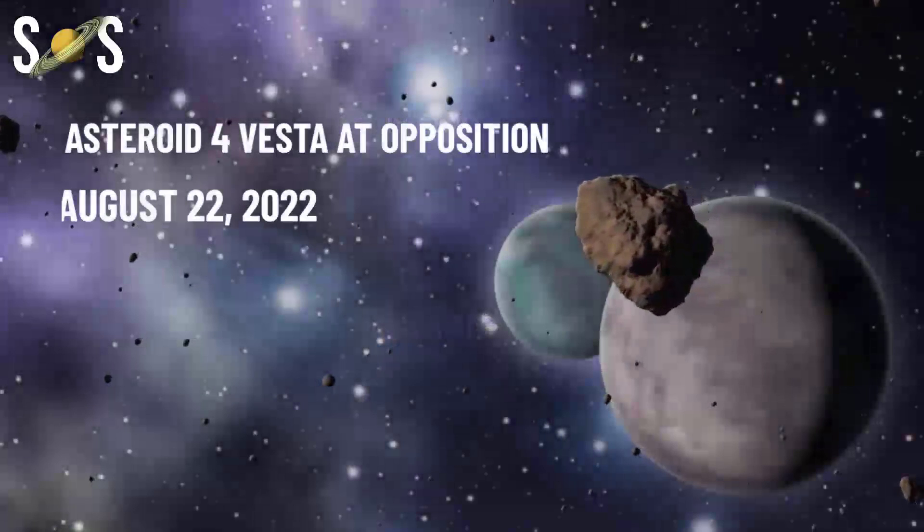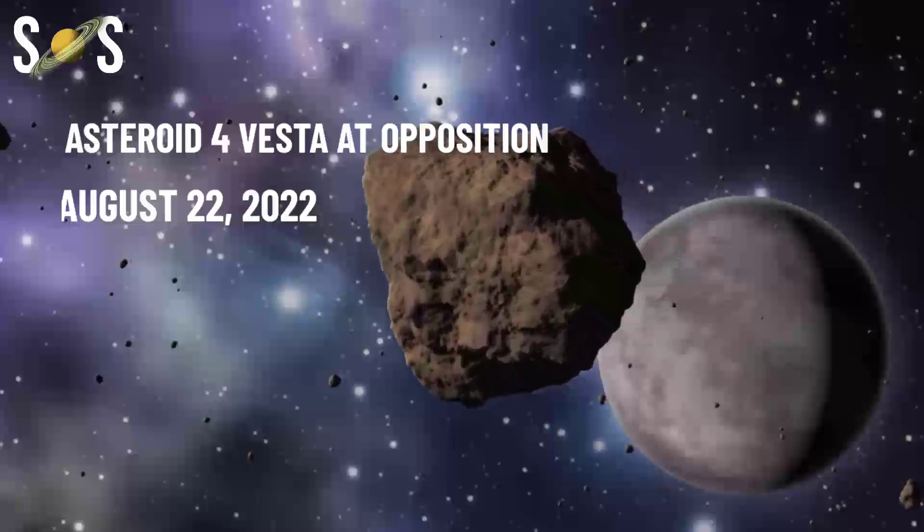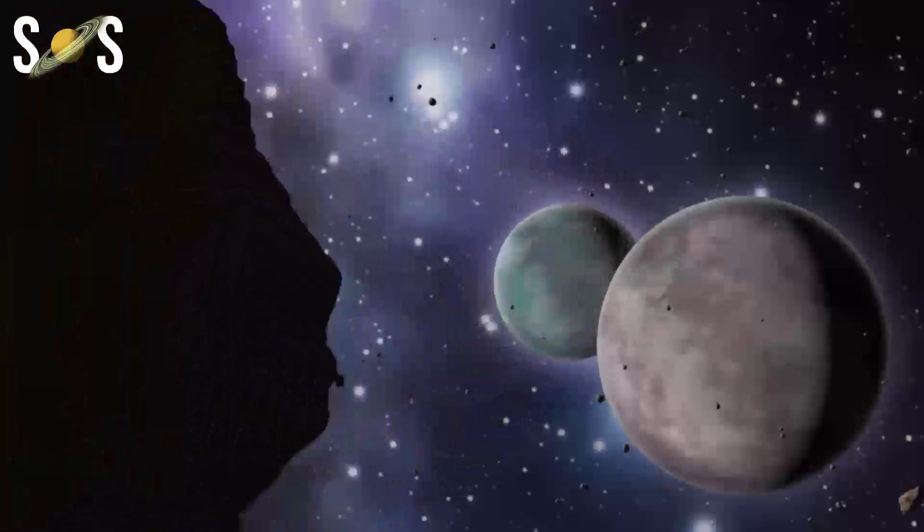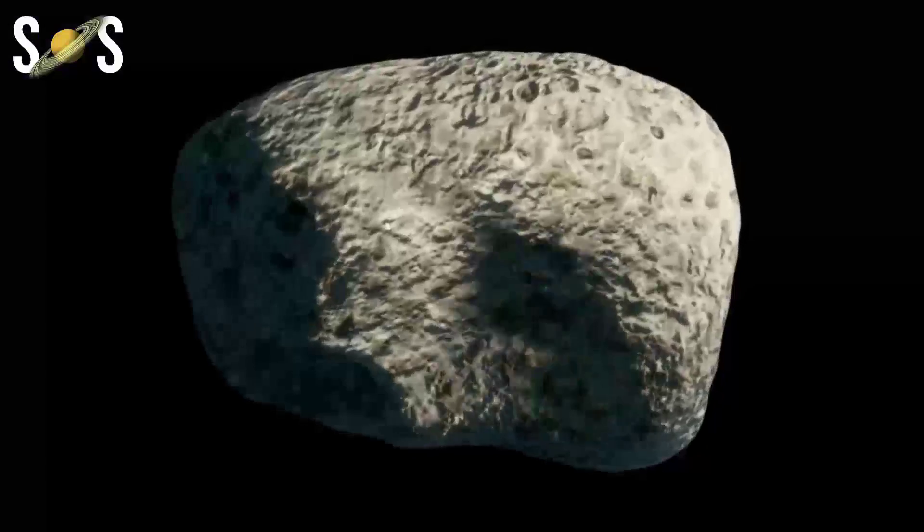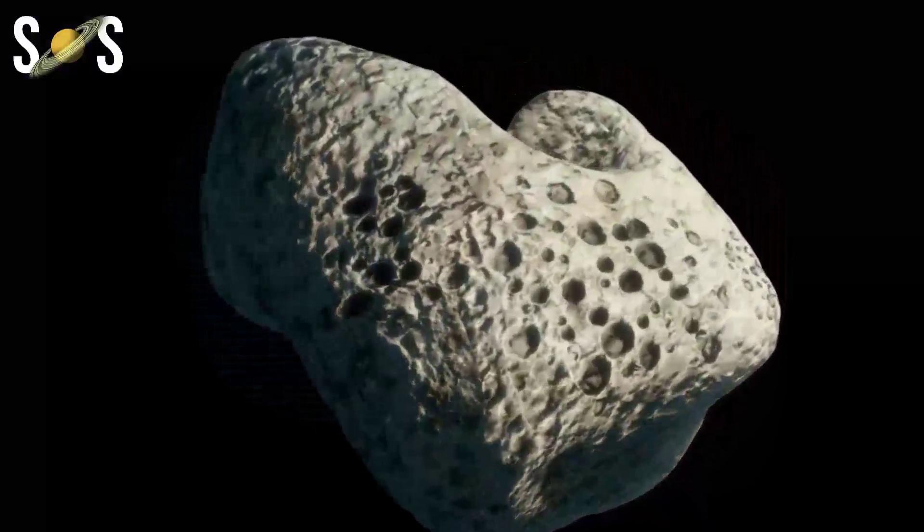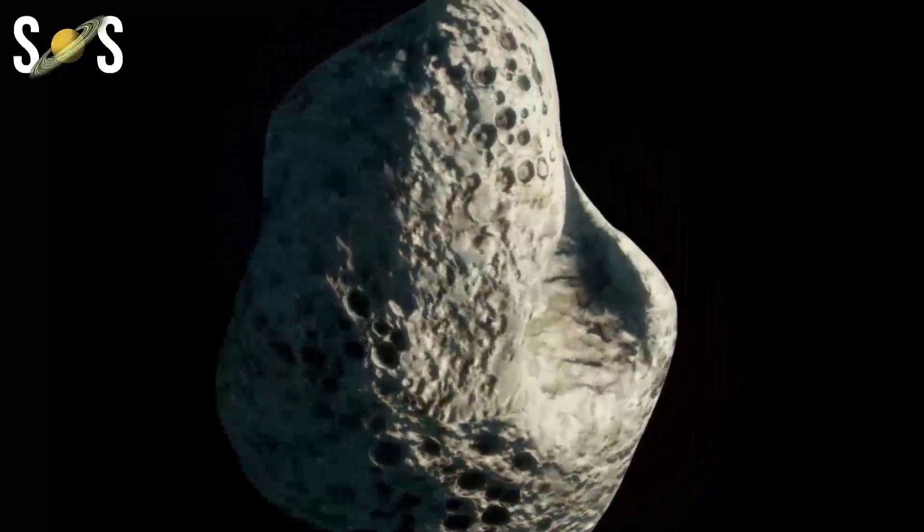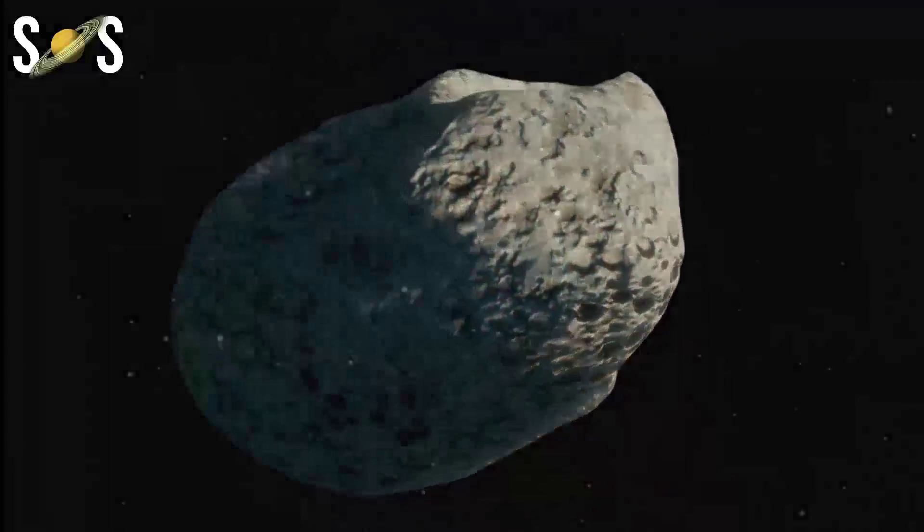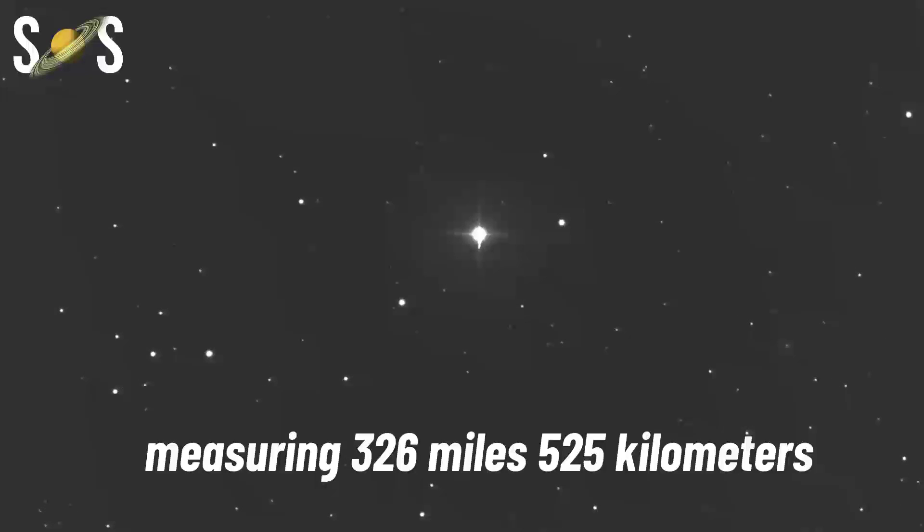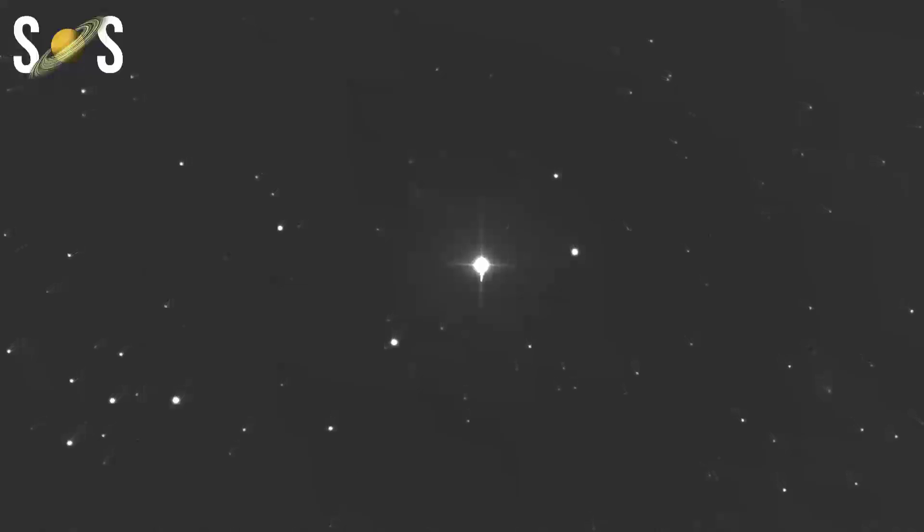August 22nd: asteroid 4 Vesta at opposition. Finally, let's round out August with an asteroid viewing opportunity. In the morning hours of August 22nd, asteroid 4 Vesta will be at opposition and brightly lit by the sun, sitting on the other side of Earth from it. 4 Vesta is one of the largest objects in the asteroid belt, measuring some 326 miles (525 kilometers) across on average. As such, you don't need high-powered stargazing equipment to view Vesta—a pair of standard binoculars is more than enough to see this not-quite-dwarf planet in the main asteroid belt.